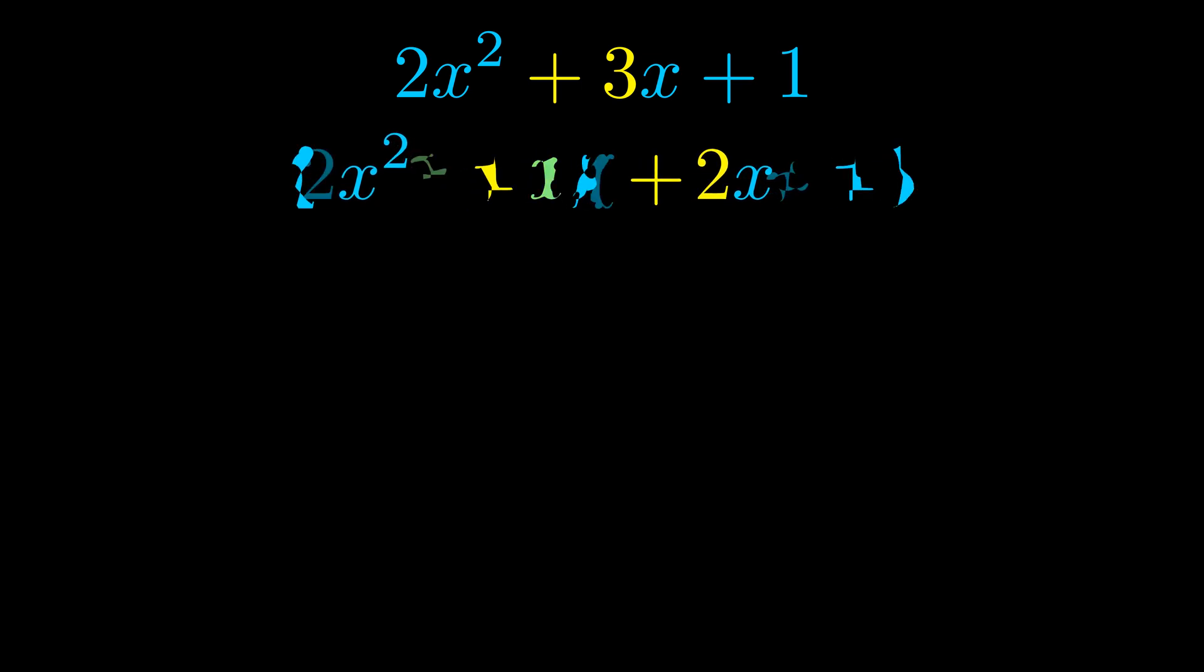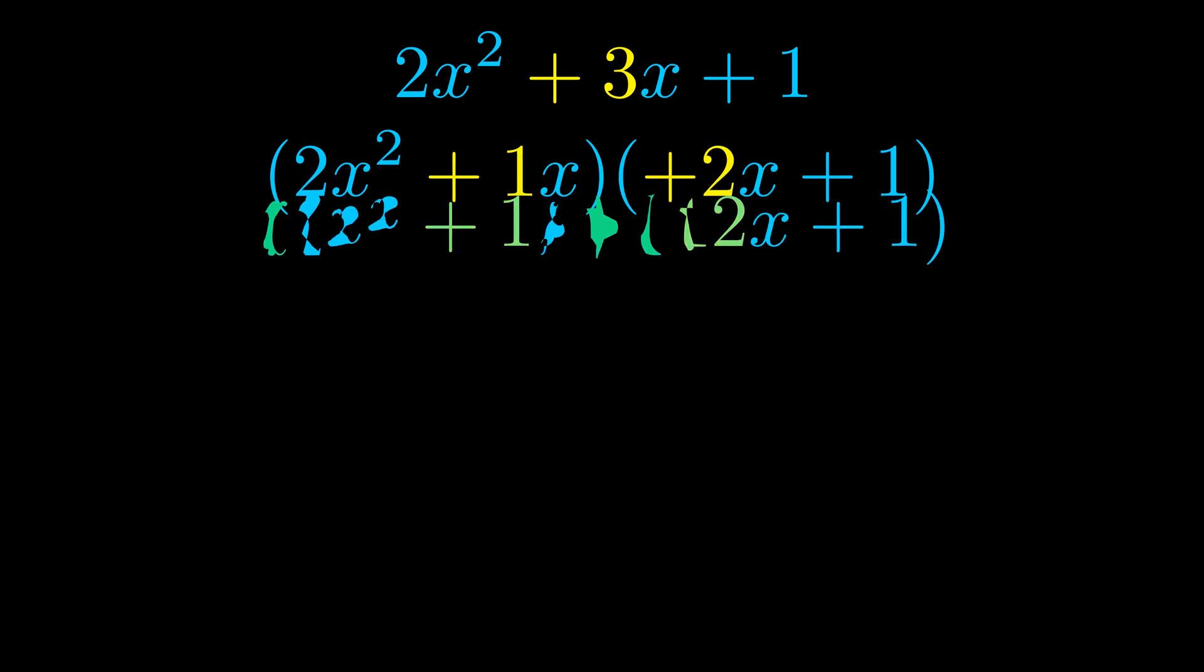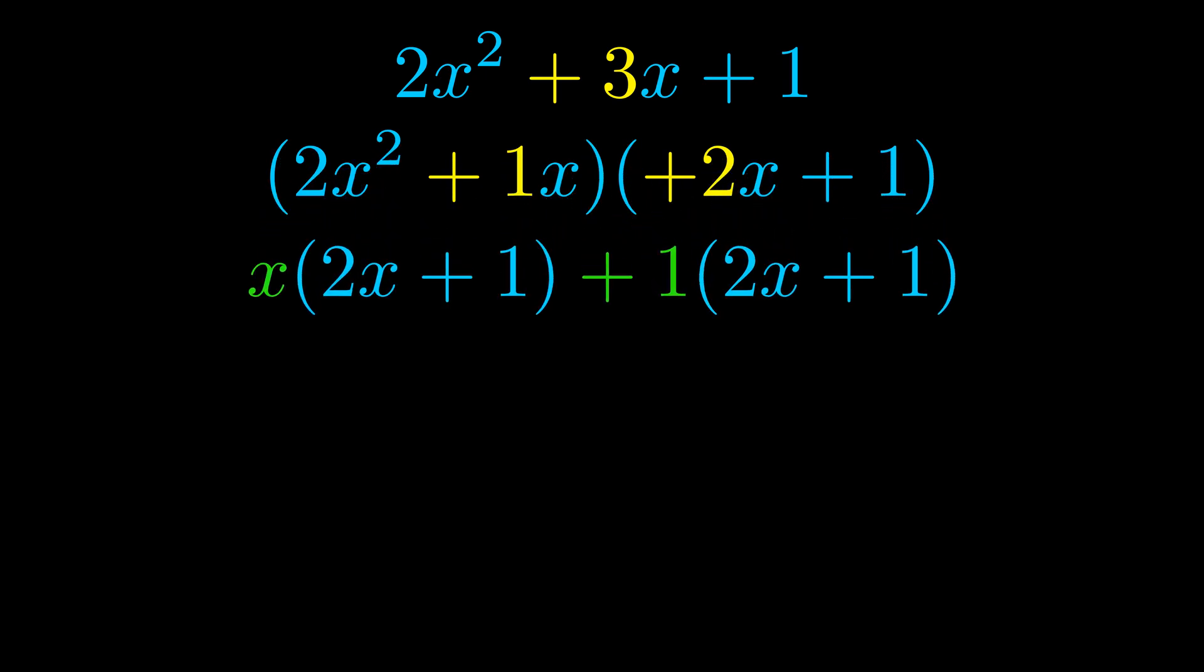Once we've done this we go ahead and put parentheses around the first term and the last term. And we do that so that we can take the greatest common factor out of both terms. We can see the greatest common factor is now outside in green. Notice also how what remains inside of the parentheses is the same in both cases. The blue values are the same. Those blue values will become one of our factors and we will combine the two green values, the GCFs that we pulled out, to get the other one. And that is our fully factored equation.